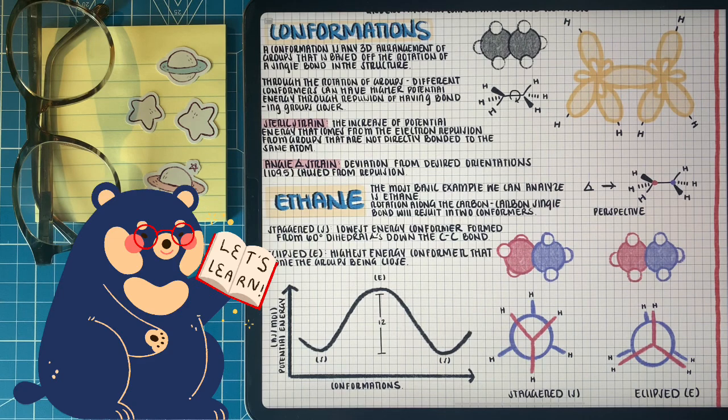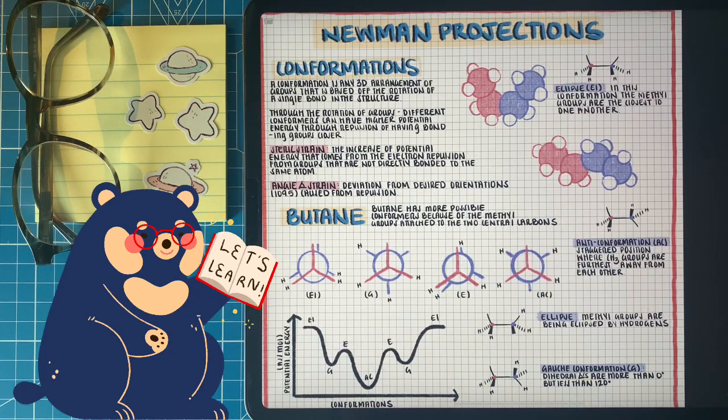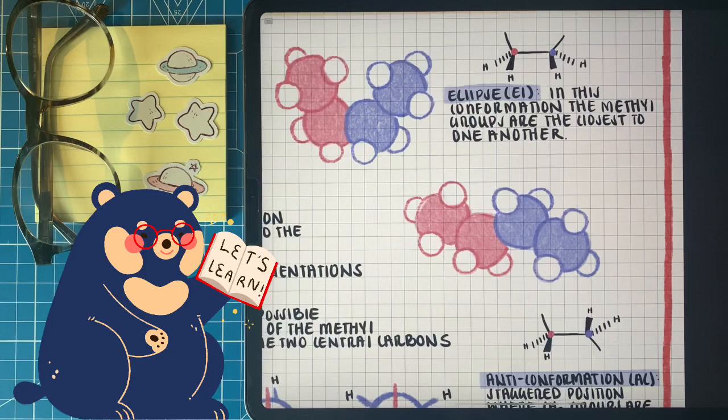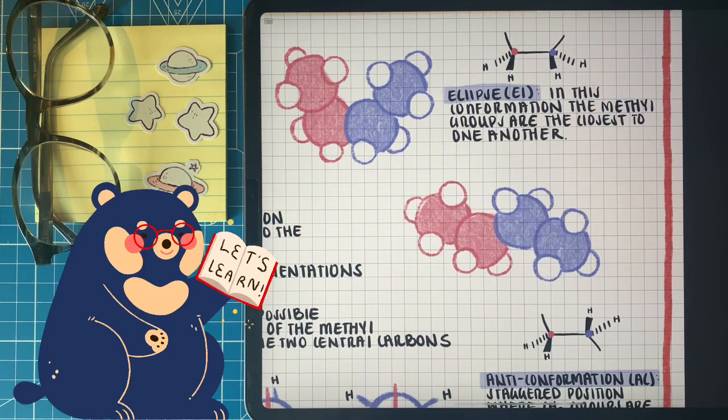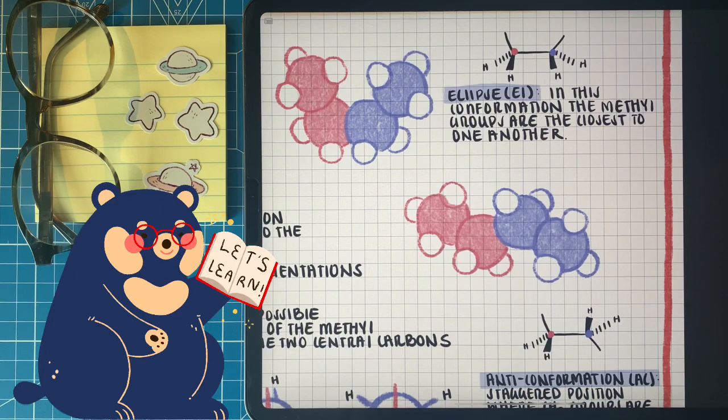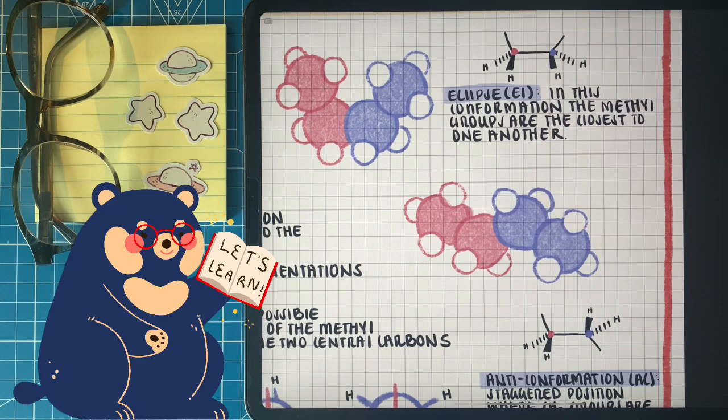This will constantly happen as ethane's bond between the two carbons rotates along its axis. After talking about the simplest example with ethane, let's increase the complexity a little bit and talk about butane. We're going to be analyzing the sigma bond between the two central carbons. We have a different scenario because a methyl group is going to have a lot more repulsive forces than a hydrogen will when we get them too close to one another.